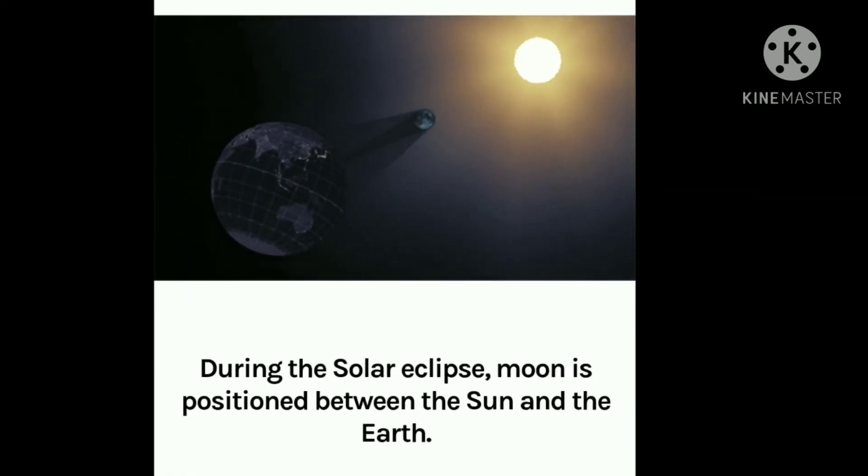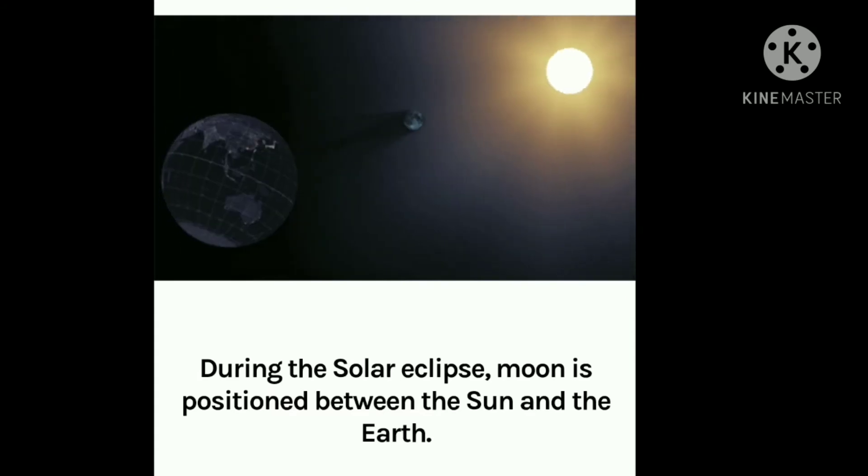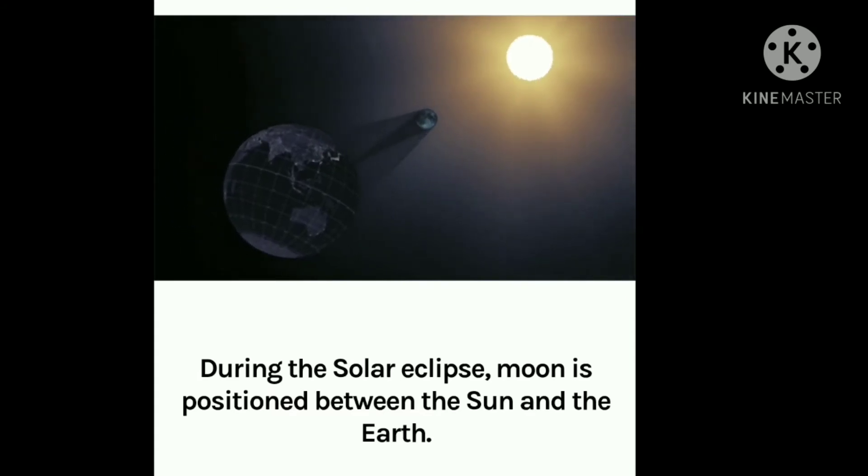During the solar eclipse, the moon is positioned between the sun and the earth. So here you are able to see how the shadow is formed on the earth, as earth is now working as a screen to get this shadow.